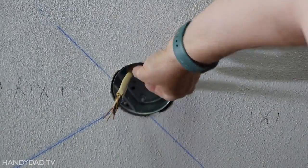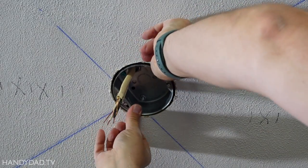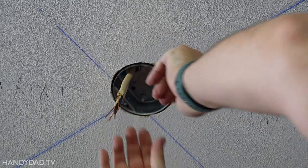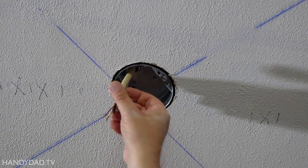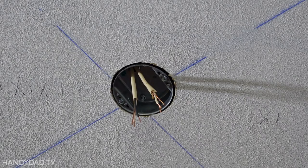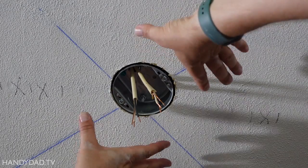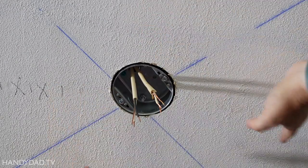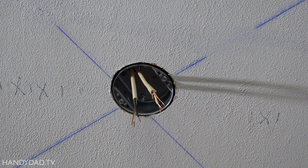There we go. Now that is rated for something like a 50 pound fan, which I've never had a fan that heavy. So there you go. That is how we install a ceiling fan mount, ready to go.